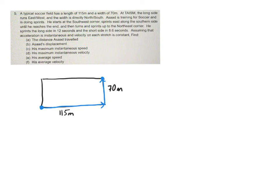He sprints the long side in 12 seconds. Okay, so 12 seconds over there. And the short side in 8.6 seconds. Assuming acceleration is instantaneous and velocity on each stretch is constant, find the distance Asad traveled. Now, obviously, this is not a perfect scenario because it does take time to speed up and change direction. We're going to not assume that so we have an easier question to work with.